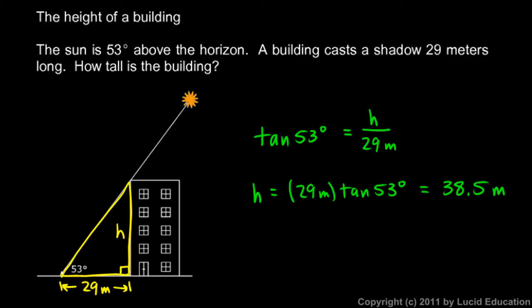And let me make one comment on this problem. We found the height of this building, and we did it with the measurement of this length down here, the shadow, and this angle. And those are both measurements that can be made from the ground. We don't actually have to go up to the top of the building.